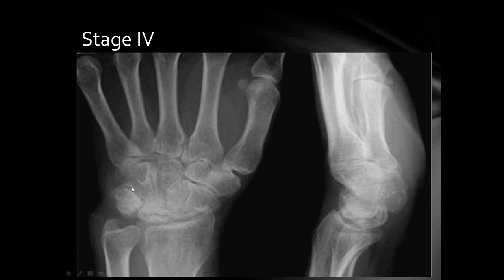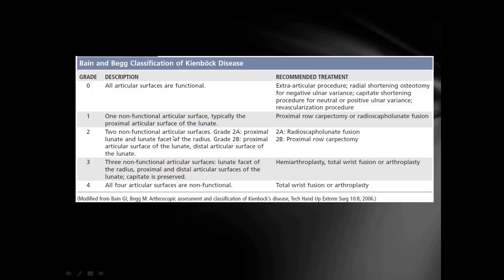In Stage 3B there is fragmentation and fixed rotation of the scaphoid. In Stage 4, sclerosis of the lunate with joint space narrowing of adjacent intercarpal joints — arthritis of the intercarpal joints with collapse or sclerosis of the lunate. The other classification is the Bain and Begg classification, which depends upon the findings of arthroscopy of the wrist.